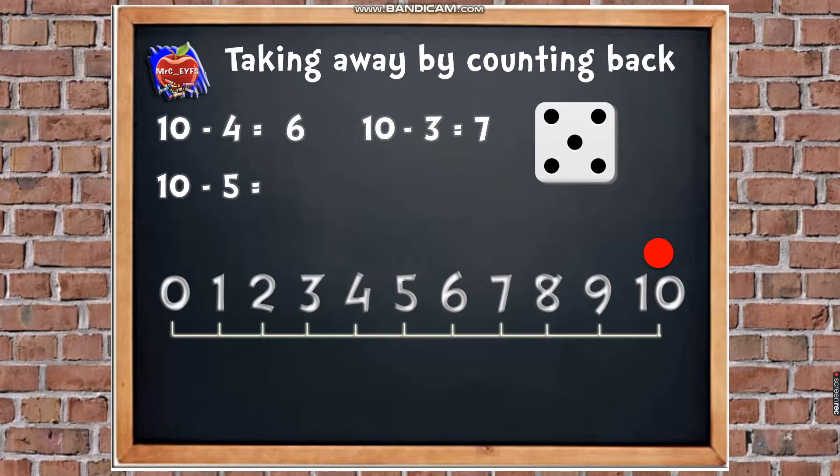Right now, what do we have to do? Okay, so we have to count back 5. So 5 jumps back. You have a go, and then we'll see if we get the same answer. So you go first now.